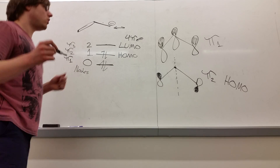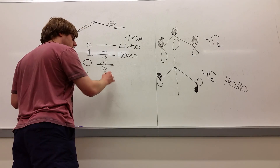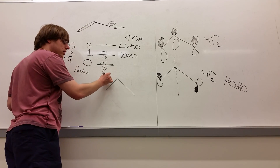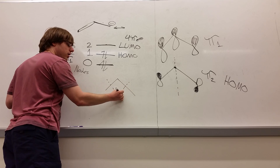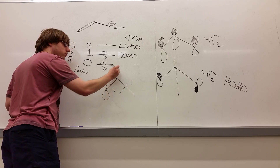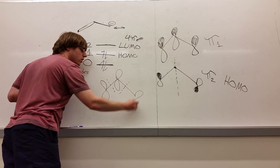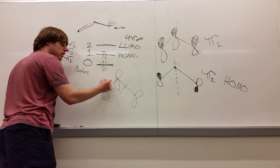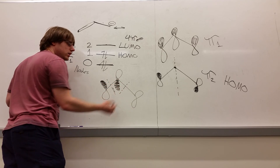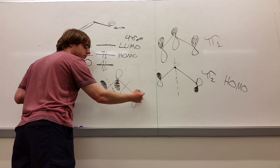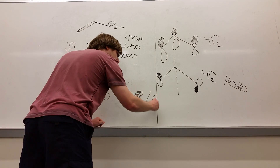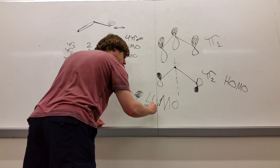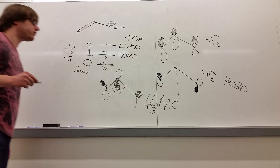For the LUMO — pi three — I have two nodes, so I place them through the bonds to give an equal number of orbitals between each node: one, one, one. I color in starting from the top, hit a node and flip the side, hit the next node and flip again. This gives the orbital diagram corresponding to my LUMO, pi three.